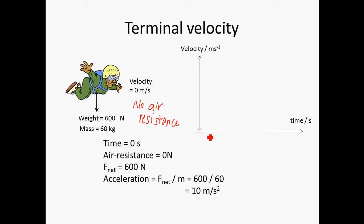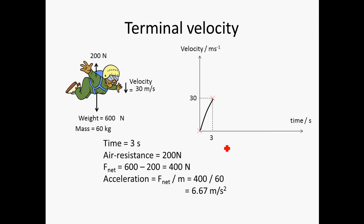We can plot the first point: velocity is zero at time zero. After a while, the velocity increases to 30 m/s. At this velocity, the air resistance hypothetically is 200 newtons. The resultant force is now 600 minus 200, which gives 400 newtons. The acceleration has dropped to 6.67 m/s², because 400 divided by 60 equals 6.67. Plotting this point, at 3 seconds the velocity has increased to 30 m/s.